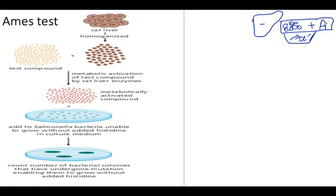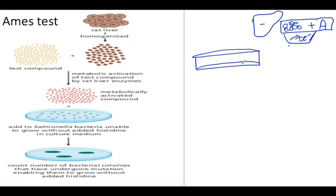You take the test compound, mix it with the rat liver homogenate, and after that the liver enzymes activate the compound. This metabolically active compound is then exposed to Salmonella bacteria in a petri dish culture. These Salmonella bacteria lack the ability to produce histidine.